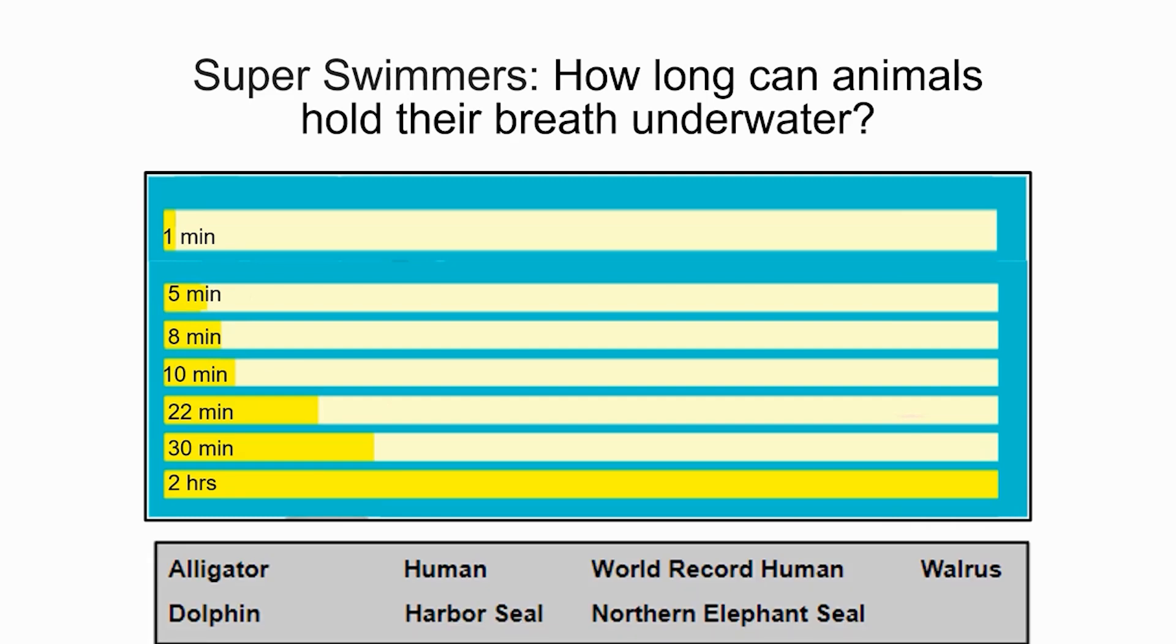This bar graph is about how long animals can hold their breath underwater. These seven bars represent the seven species listed in the gray box. Which species goes with which bar? And why do you think that?